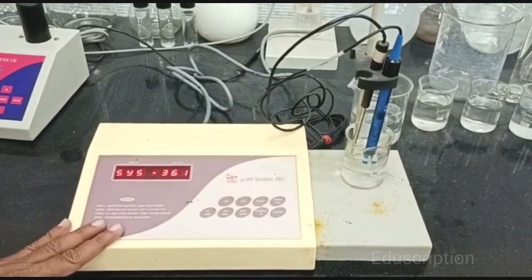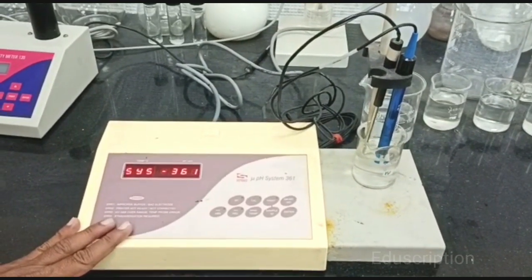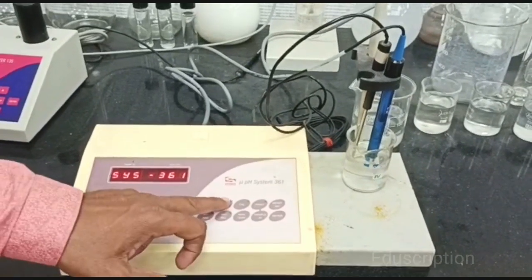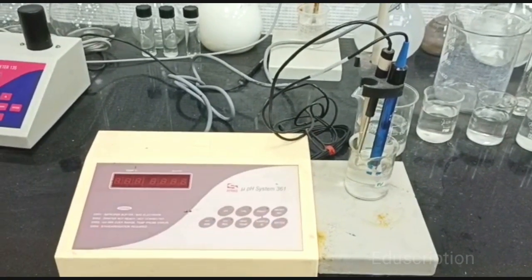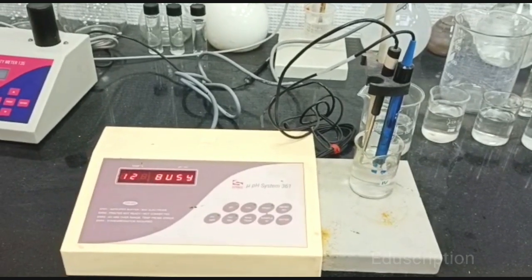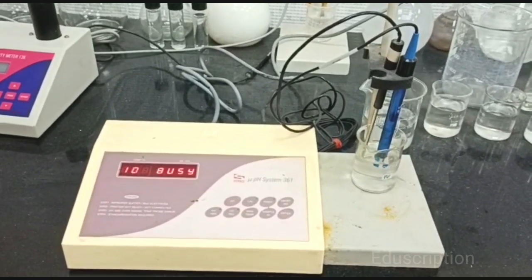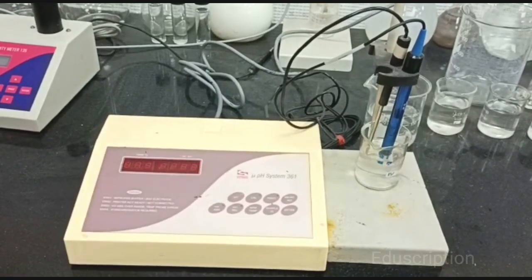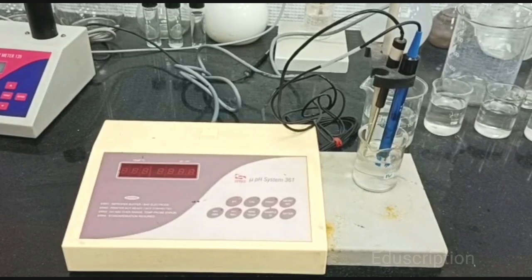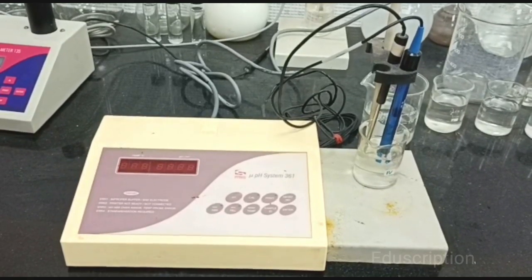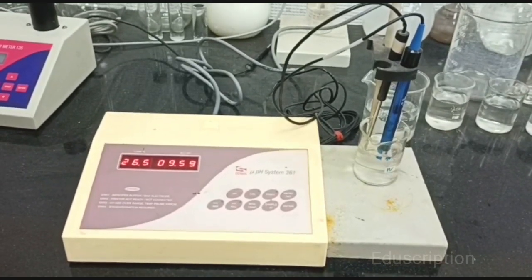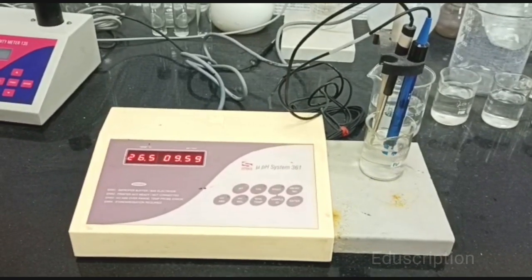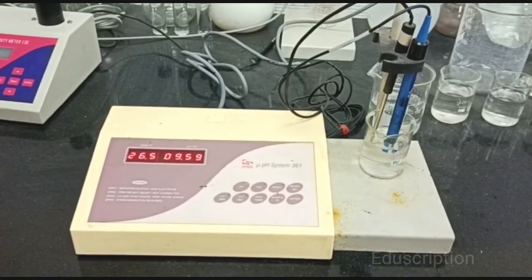Now we will detect the pH value of last beaker solution. So press pH key and then enter. Now see or observe the pH value of fourth beaker is 9.59.